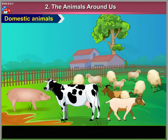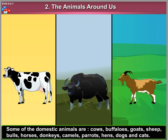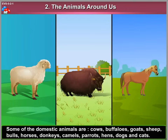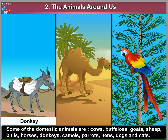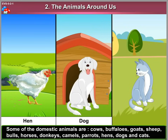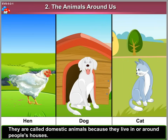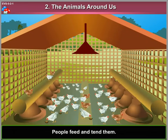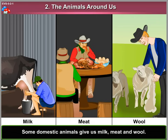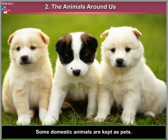2. Domestic Animals. Some of the domestic animals are cows, buffaloes, goats, sheep, bulls, horses, donkeys, camels, parrots, hens, dogs and cats. They are called domestic animals because they live in or around people's houses. People feed and tend them. Some domestic animals give us milk, meat and wool. Some domestic animals are kept as pets.